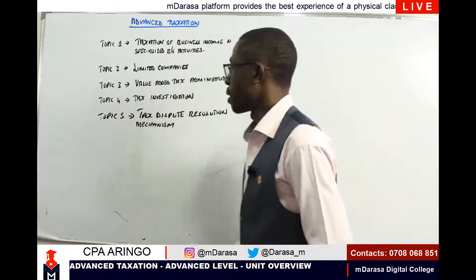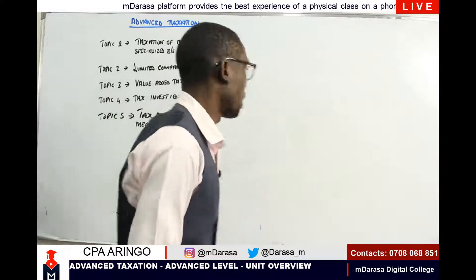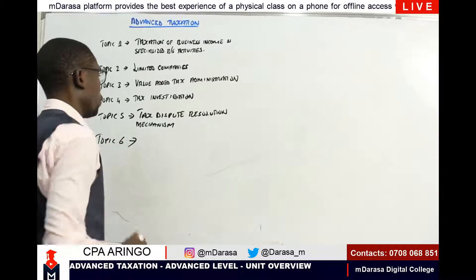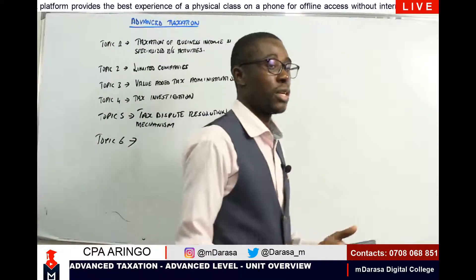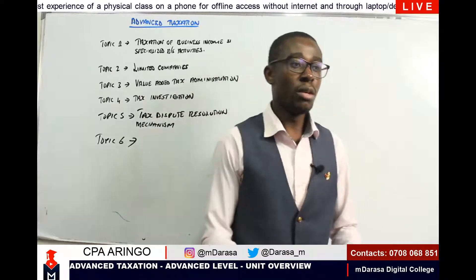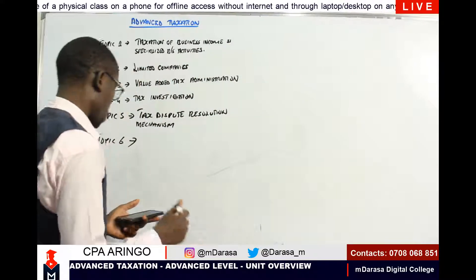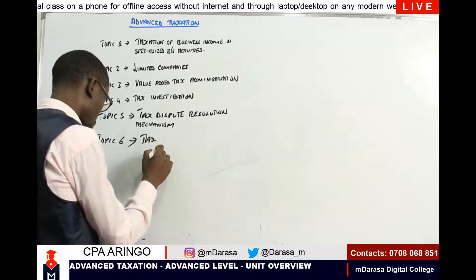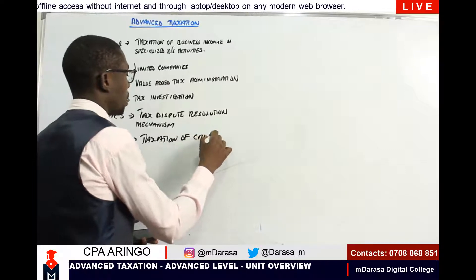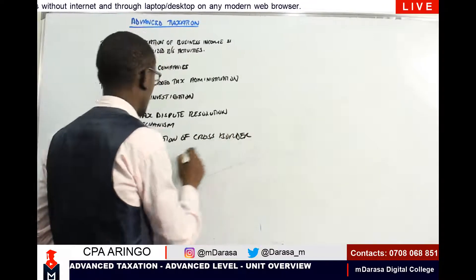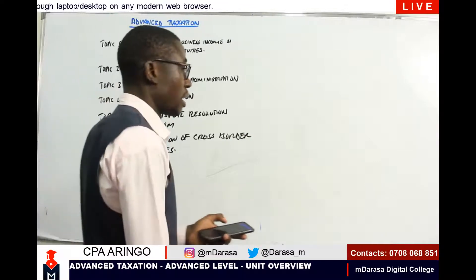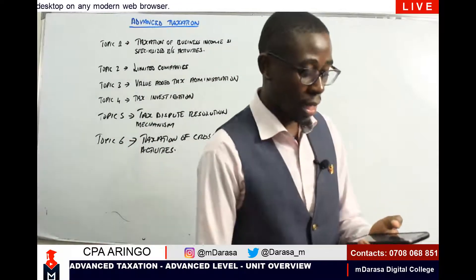Topic number six was present in the previous syllabus, but they have incorporated some new elements which we will also be expected to understand. Under topic number six, we will be expected to cover taxation of cross-border activities.